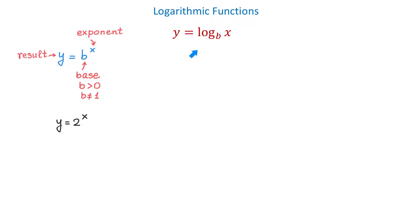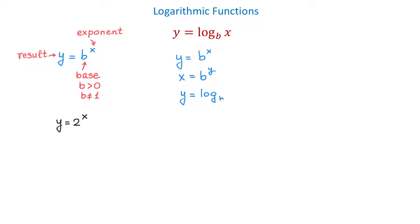The logarithmic function is the inverse of the exponential function, and to get an inverse, we need to interchange x and y. So here again we have the exponential function y equals b to the x power. To get the logarithmic function, in place of y we will write x, and in place of x we will write y. Now y represents the exponent, and x represents the result. To solve this function for y, we need to use logarithm, and we write y equals log base b of x. This is the notation we use when we need to solve this function for y.